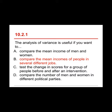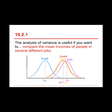Option a) compare the mean income of men and women — that's a situation where you would want to use a two-sample t-test, because you only have two groups of people and you're comparing them on a quantitative outcome variable. Option c) test the change in scores for a group of people before and after an intervention — that's when you want to use a repeated measures t-test, because you're looking at differences for one group across two points in time. Option d) compare the number of men and women in different political parties — because it involves frequencies or a nominal variable you're counting, you would want to use the chi-square test, which we'll talk about in the last chapter of this course.